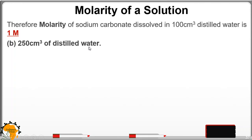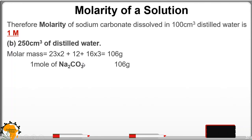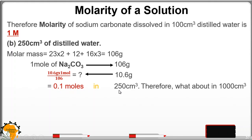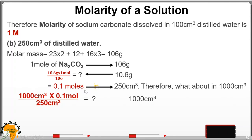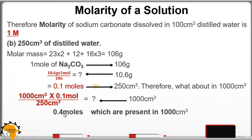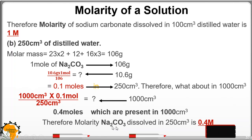For part B, 250 cm³ of distilled water: we repeat the same calculation. 1 mole = 106 g; 10.6 g gives 0.1 moles. These 0.1 moles are present in 250 cm³. What about in 1,000 cm³? Cross-multiplying gives 0.4 moles in 1,000 cm³. Therefore, the Molarity of sodium carbonate dissolved in 250 cm³ is 0.4 M.